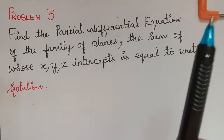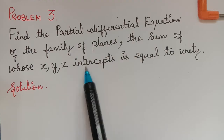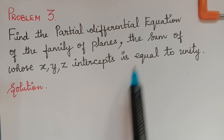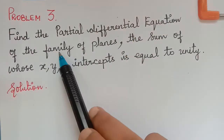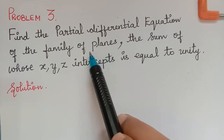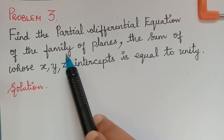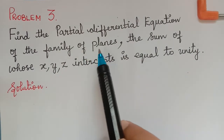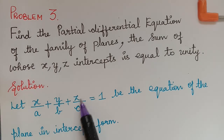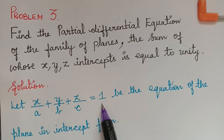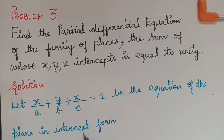The x, y, z intercepts will be the constants. By eliminating those constants, we have to form the partial differential equation of the family of planes. To do that, first we should know the general equation of the family of planes, given by x/a + y/b + z/c = 1, which is the equation of a plane in the intercept form.